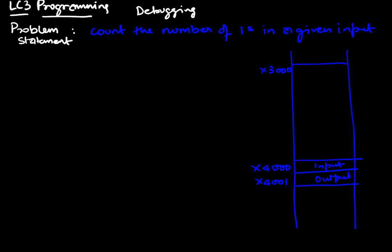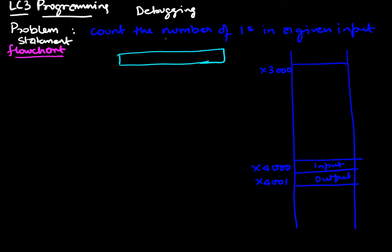Let's devise a solution by writing a flowchart. The basic intuition is to take the input number — which is made up of 16 bits — and look at each bit in turn. We can start counting from right to left, or we can look at the leftmost number, extract it, shift the number left, and keep counting. My idea will be to use the leftmost number, and the reason will become clear in just a second.